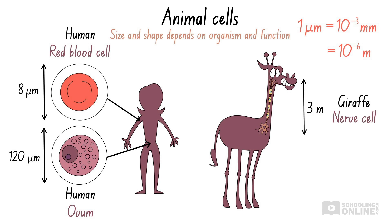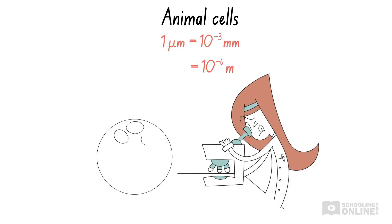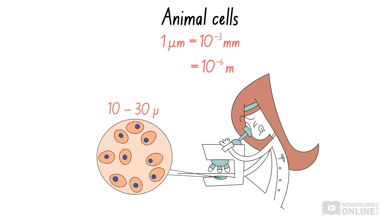Of course, animal cells do not typically grow to this length. A typical animal cell has an average size ranging from 10 to 30 micrometres in diameter. Generally speaking, animal cells contain a membrane-bound nucleus and organelles.